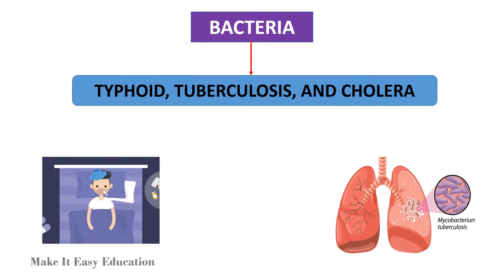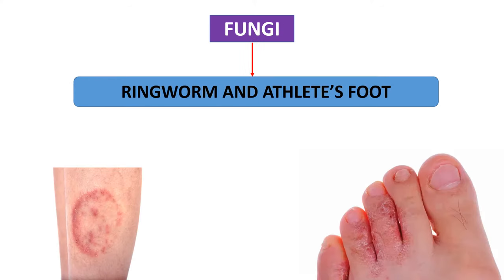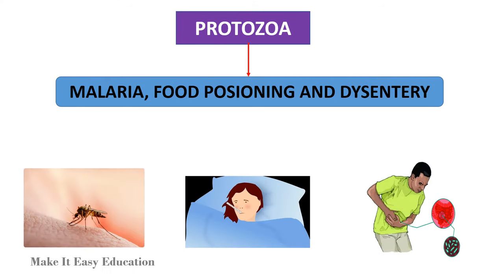Bacteria cause diseases such as typhoid, tuberculosis, and cholera. Fungi cause diseases such as ringworm and athlete's foot. Protozoa cause diseases such as malaria, food poisoning, and dysentery.